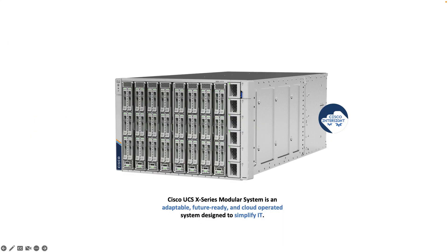The answer to that — and someone can play the drum roll — is the Cisco UCS X-Series modular system, managed by Intersight. It was introduced by Cisco just last year after a decade of the older UCS, and it's got a cloud operating system built in from the beginning to give you that cloud-like experience. We like to say it blurs the line between on-prem and the cloud. Let's take a look at what problems it solves in today's world of hybrid infrastructure and cloud operations.